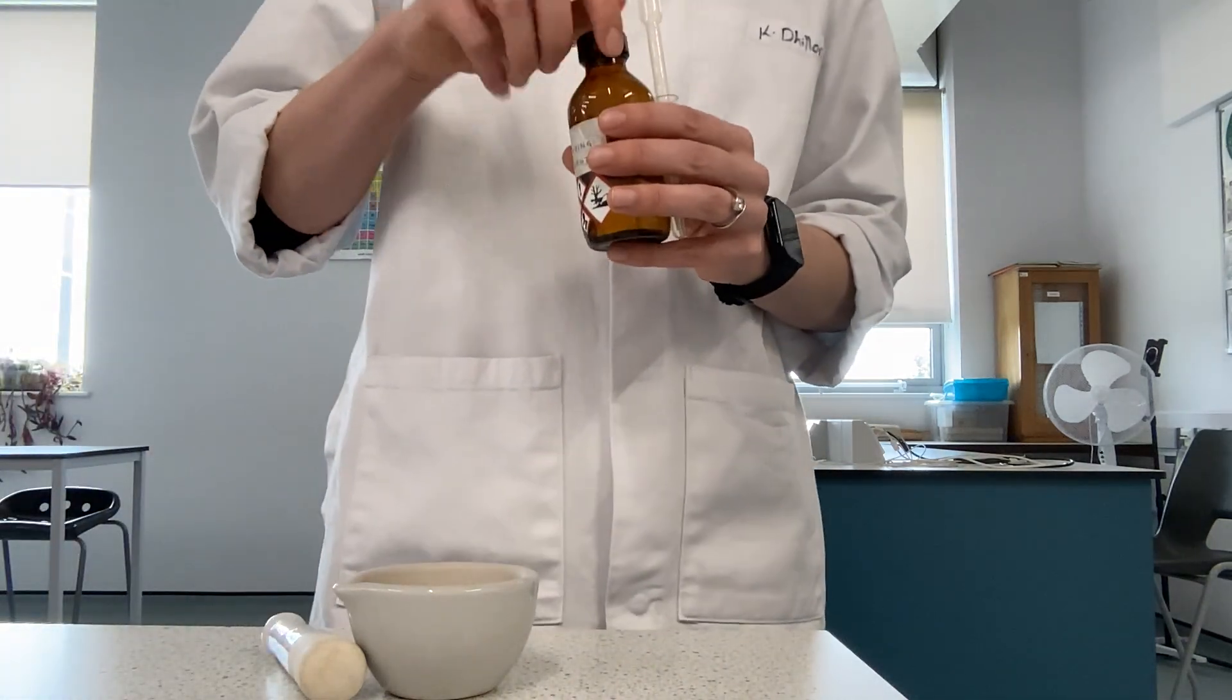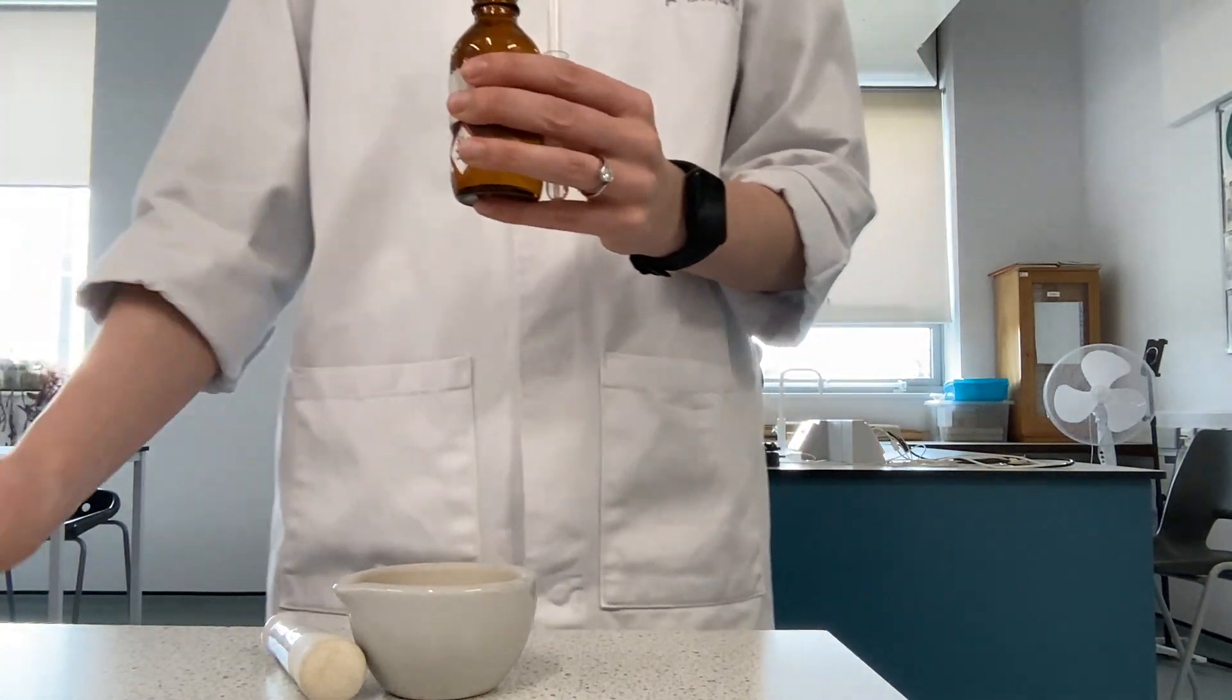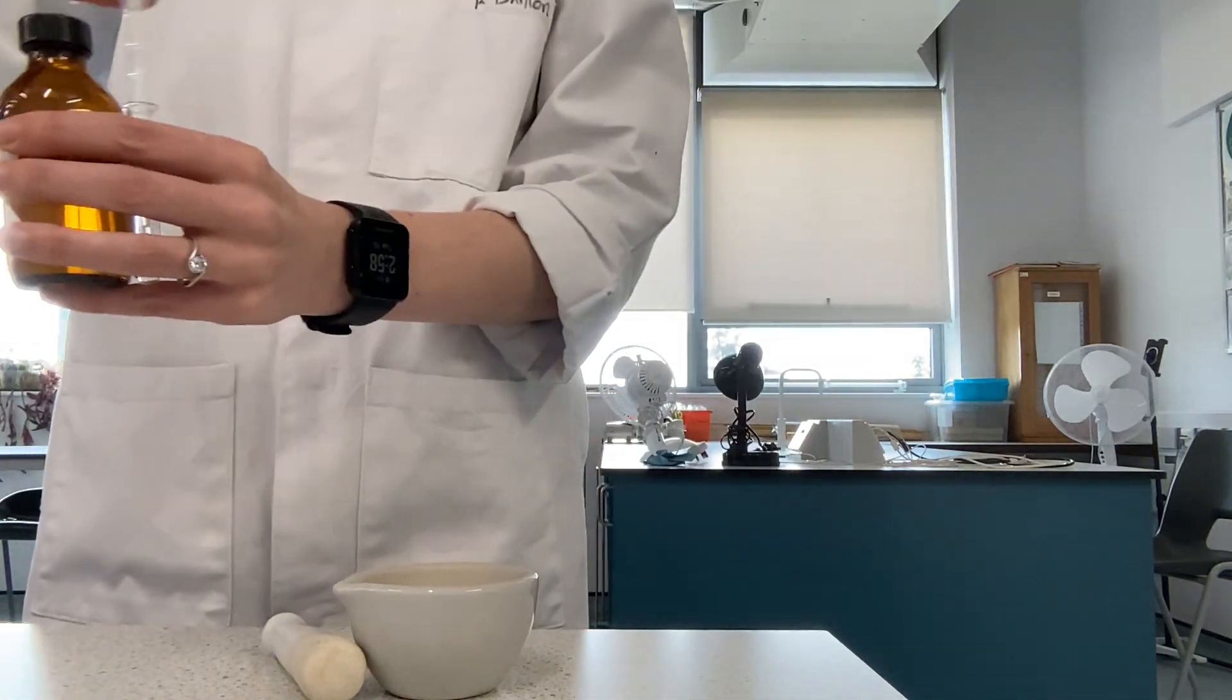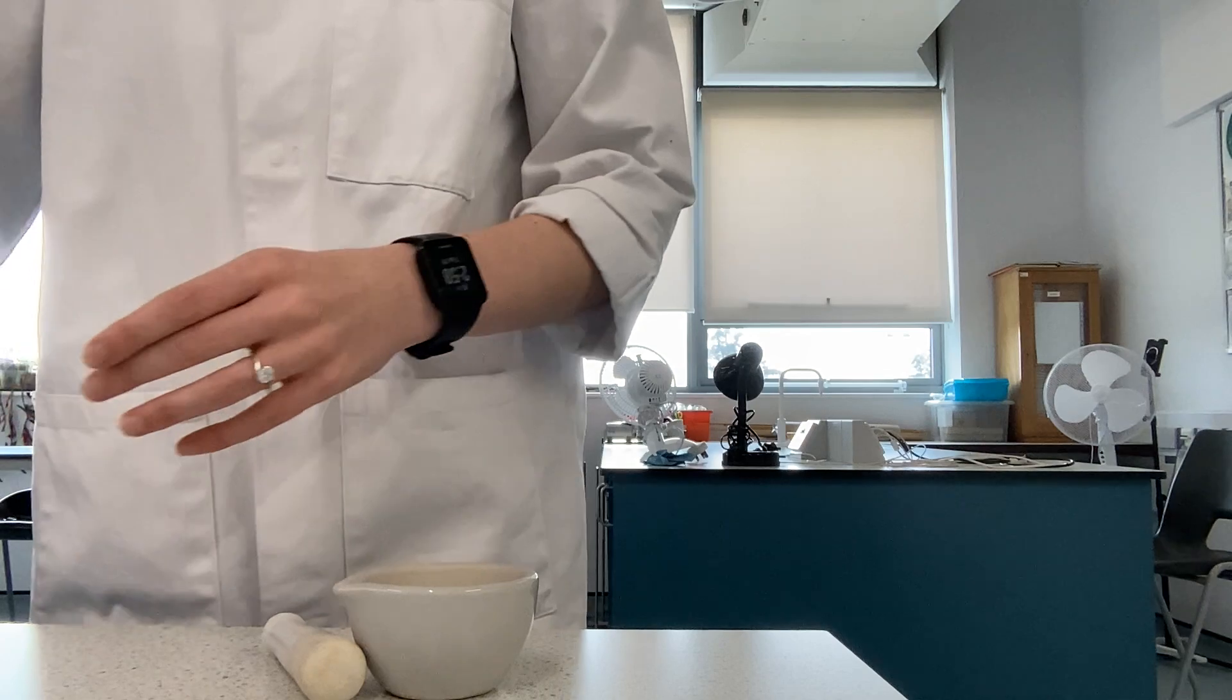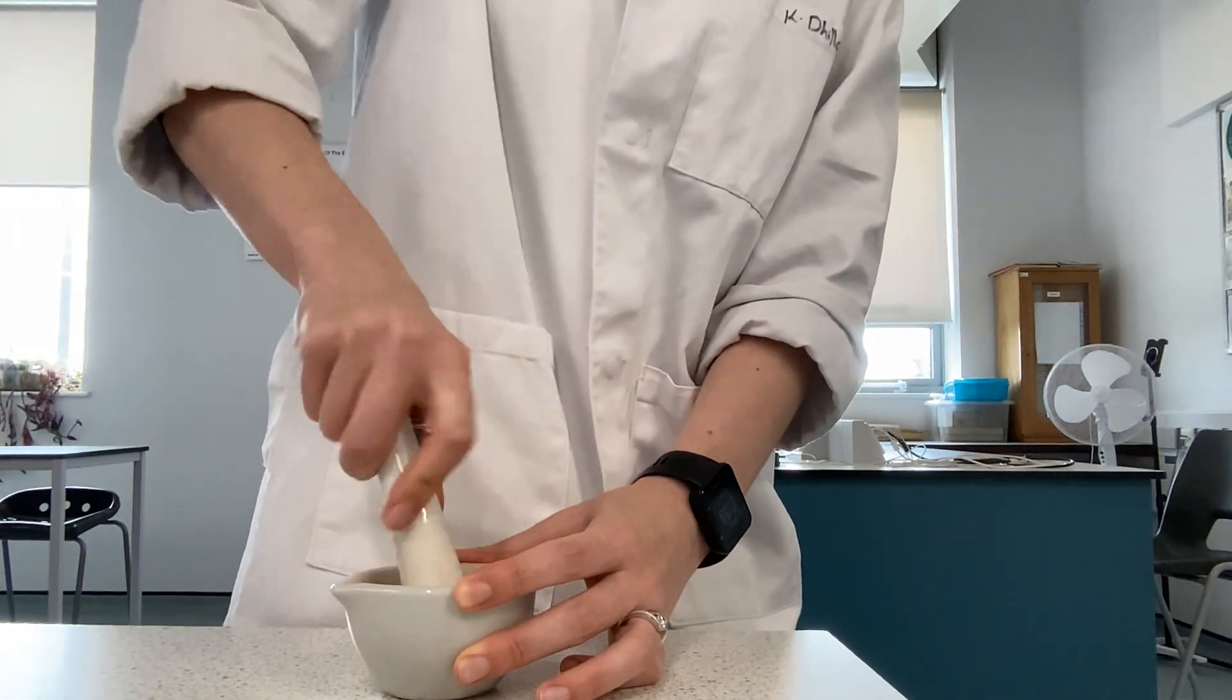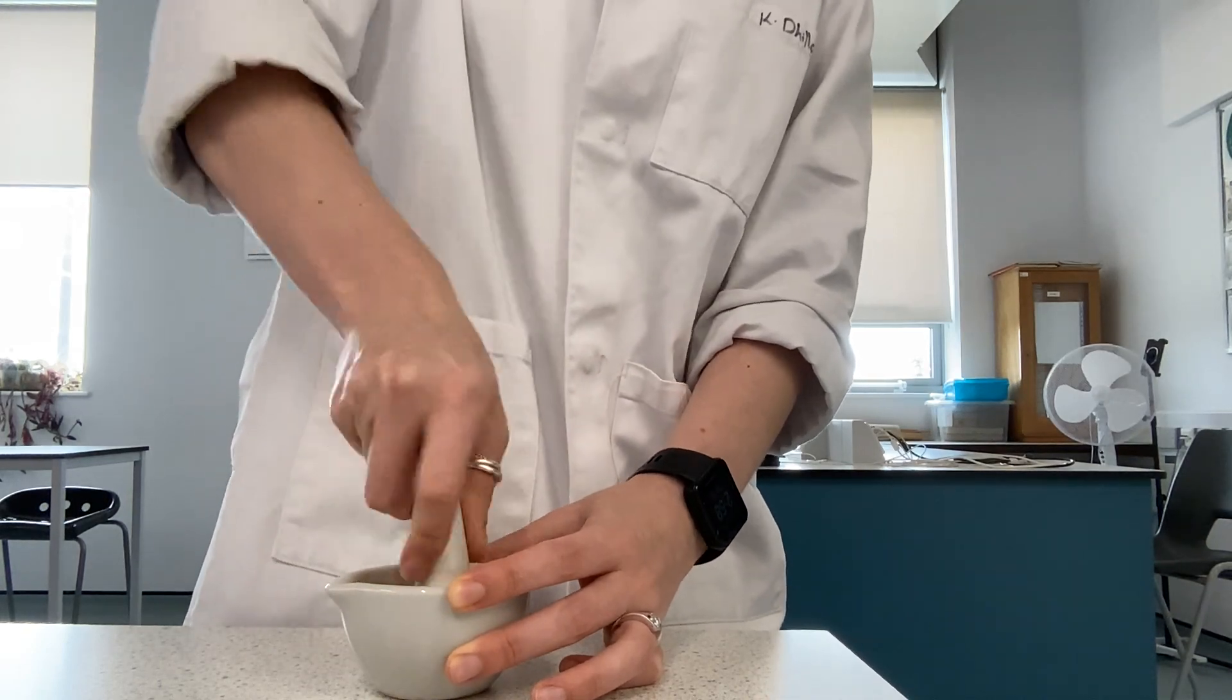What we will then do is use a pestle and mortar to get a smooth pulp. I'll get my pestle and mortar and grind the leaves up until I have a smooth pulp.